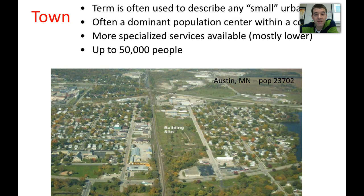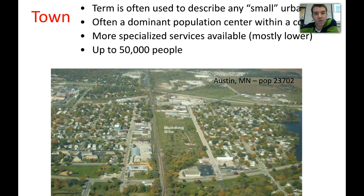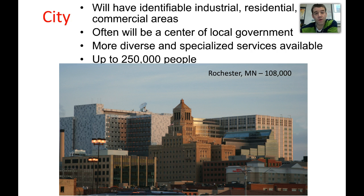The next level would be a town, where you start to feel like you're in a miniature urban setting. Usually there's a major industry, corporation, or specialized service available — with manufacturing on the outskirts. There is usually an urban center, a main street, where most of the population is concentrated. Towns are usually up to about 50,000 people, and some of the more specialized services may still need to be accessed at a higher level, like a city. Cities will have more definable areas: distinct industrial characteristics, specific commercial areas, a main street shopping district, and very intentional residential neighborhoods.